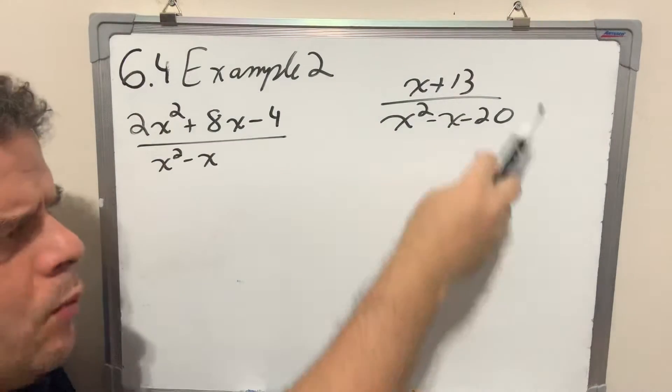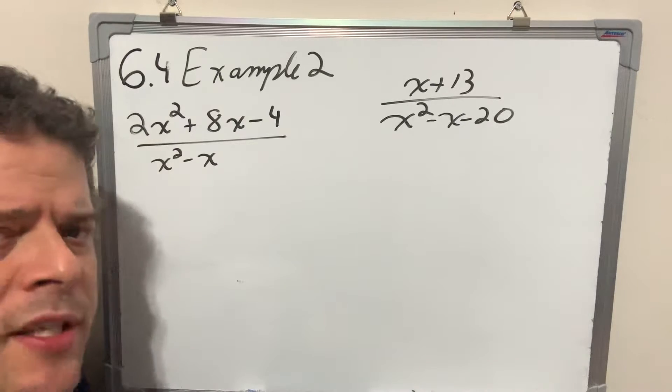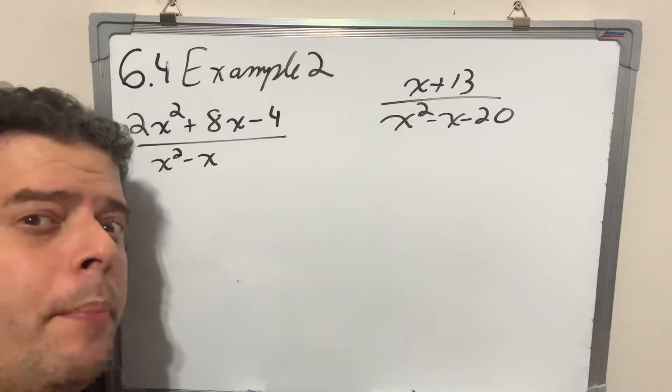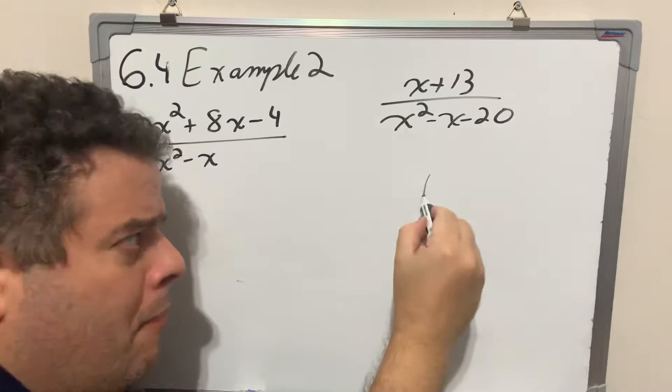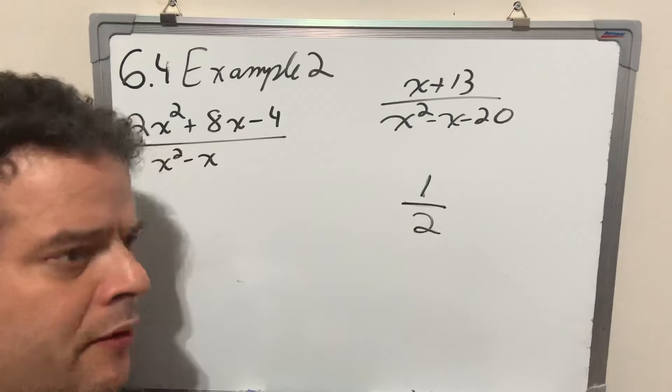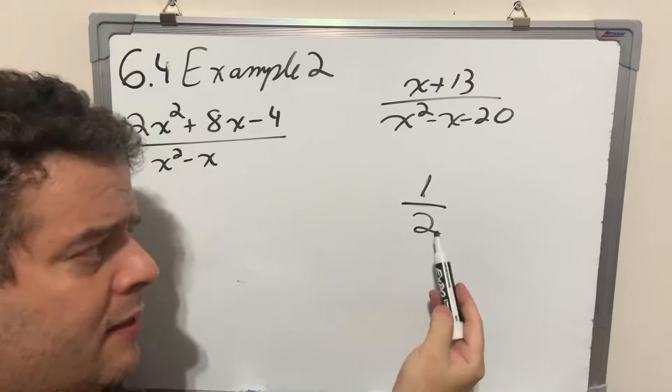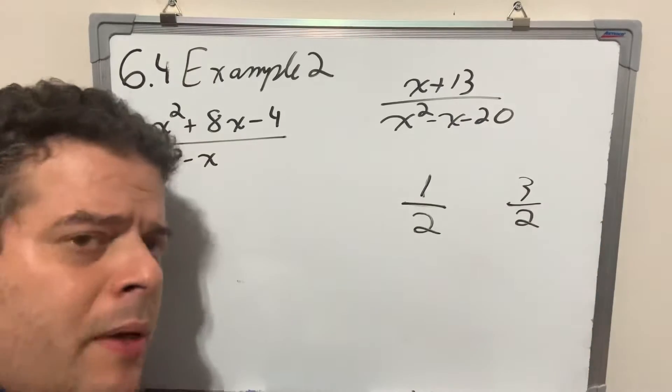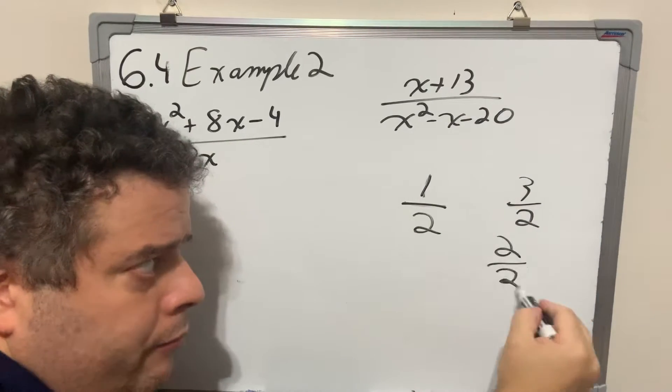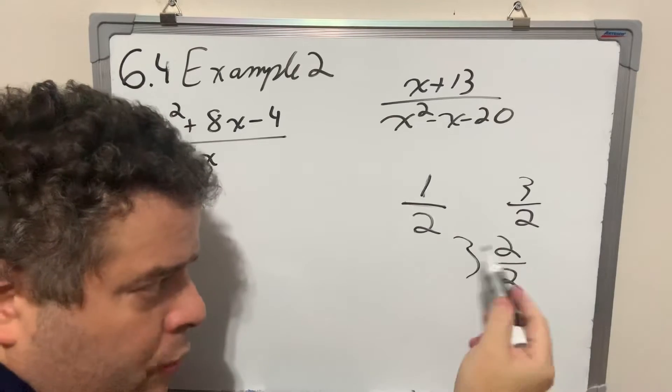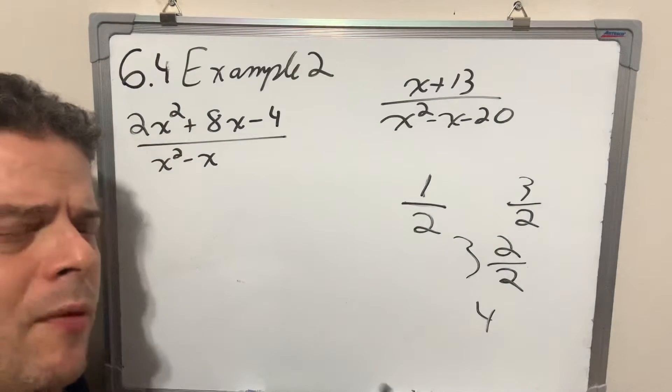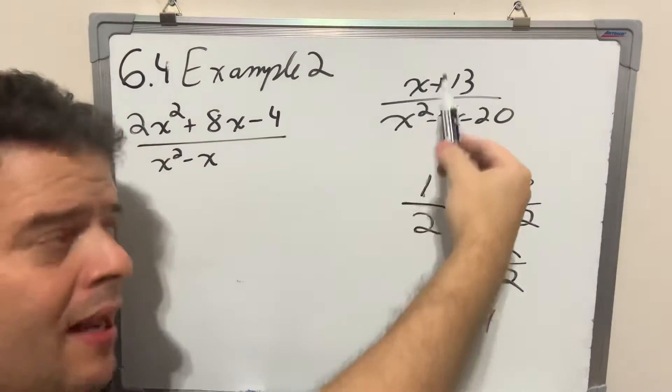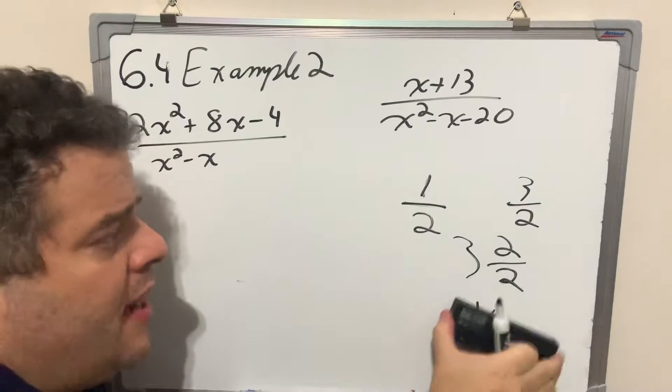First of all, yesterday we were working with this expression. Now notice that the numerator is of first degree and the denominator is of second degree. That means it's a proper fraction. Just like regular fractions, if the denominator is bigger than the numerator, it's a proper fraction. If the numerator is bigger, it's an improper fraction. In order for us to work with a proper fraction, the numerator's degree has to be bigger than the denominator's degree.